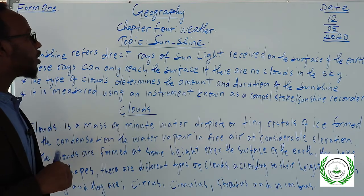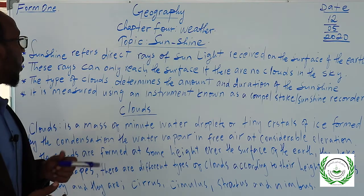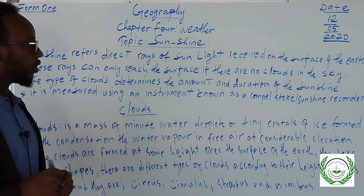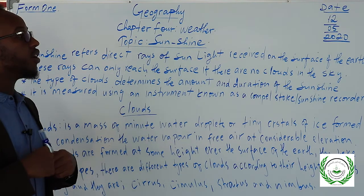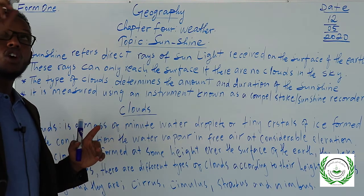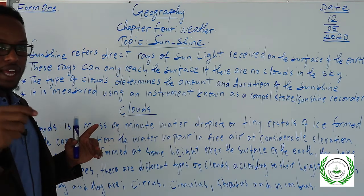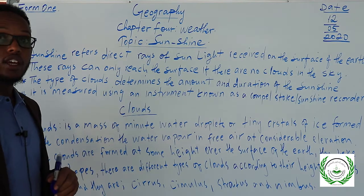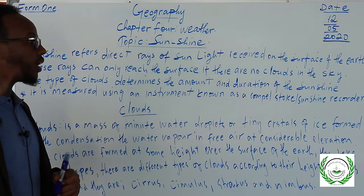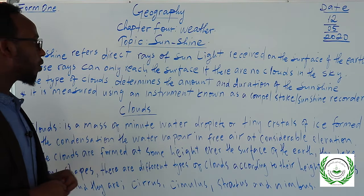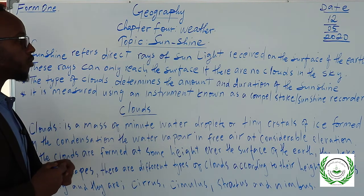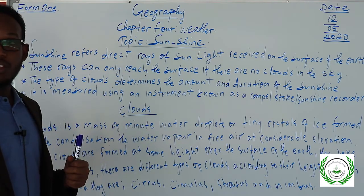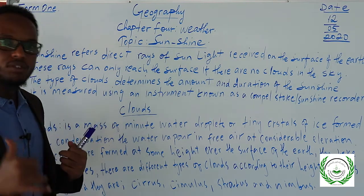These rays can only reach the surface if there are no clouds in the sky. The type of clouds determines the amount and duration of sunshine. There are different types of clouds, and we will see here the different types of clouds and how they affect the amount and duration of sunshine.